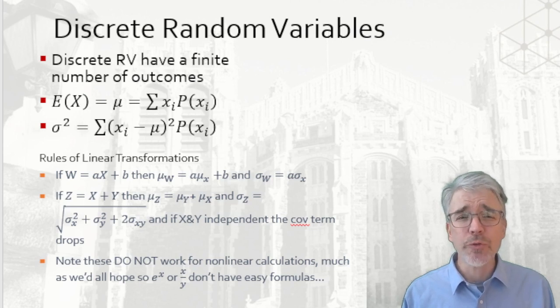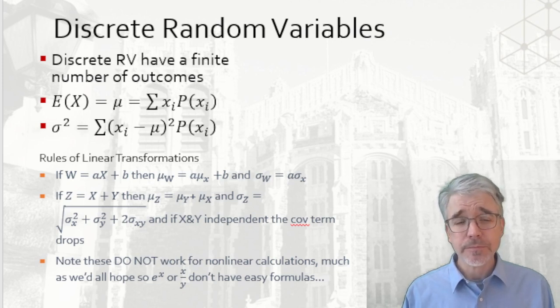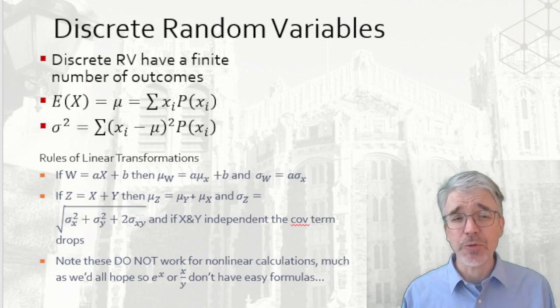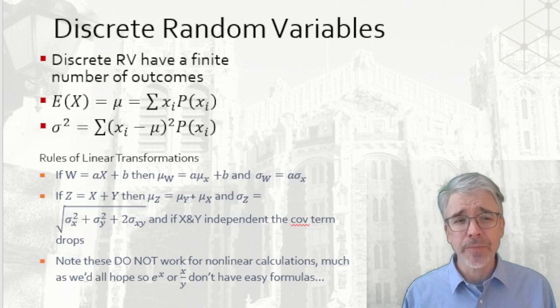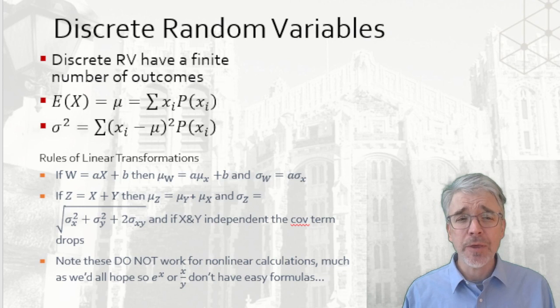Next, we have the rules of linear transformations, which work pretty much the way we'd like them to. If we have some variable X, which is a discrete random variable, and we want to create some new variable W as aX plus b, then the mean of W is going to be a times the mean of X plus b. Standard deviation of W is going to be a times the standard deviation of X. Drop the b in that case.